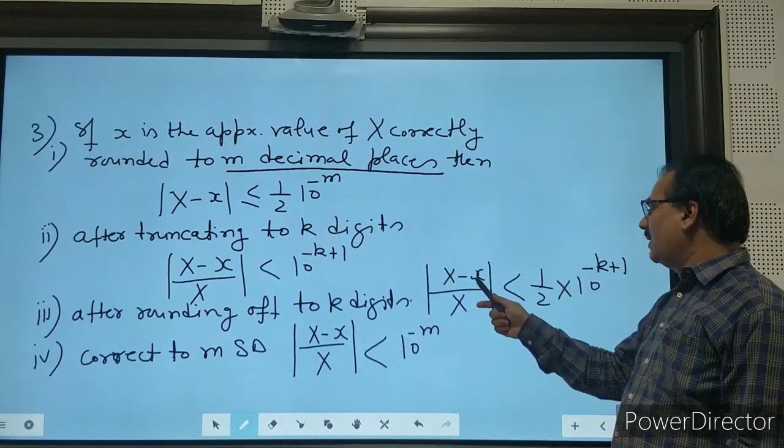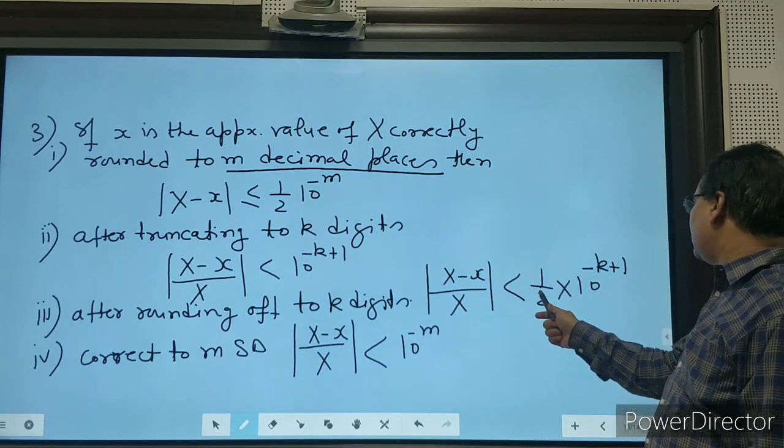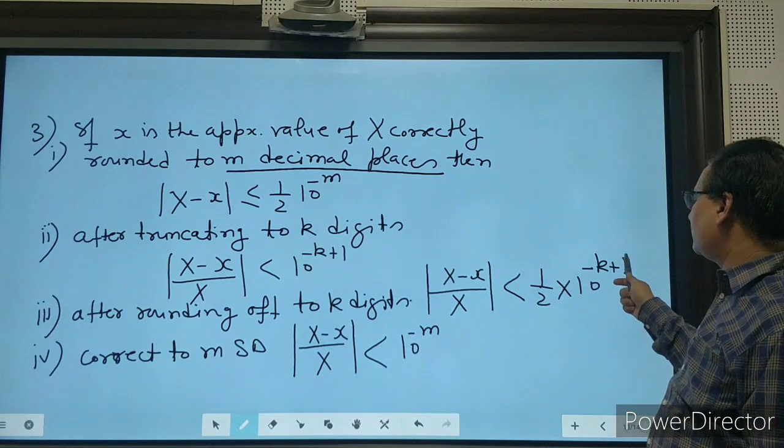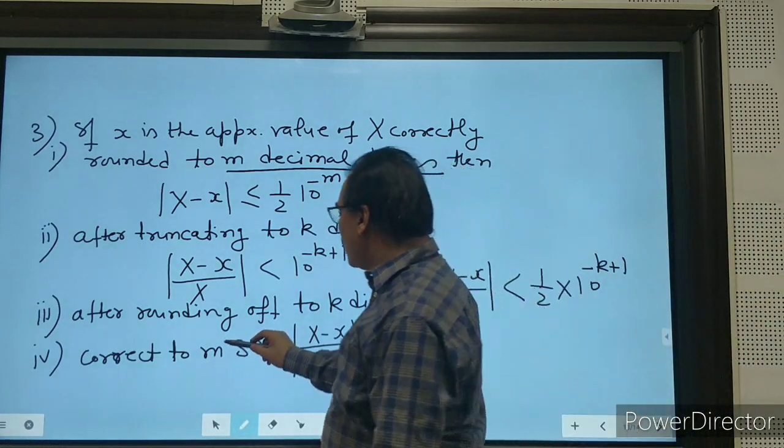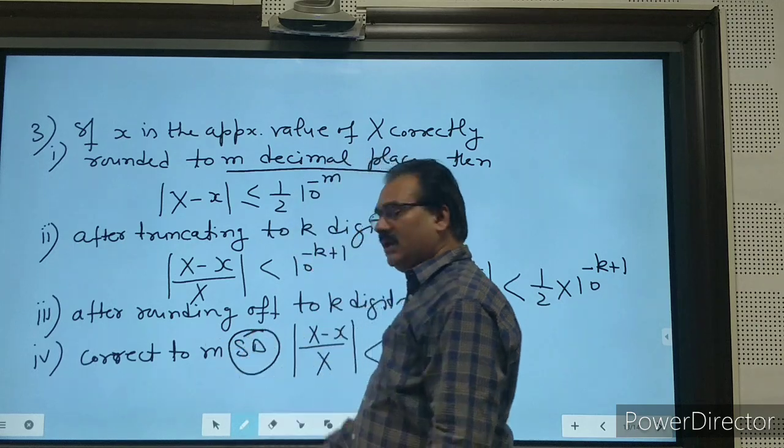|X - x|/|X| < (1/2) × 10^(-k+1), correct to m significant digits. So this formula becomes |X - x|/|X| < 10^(-m).